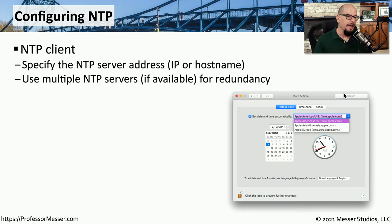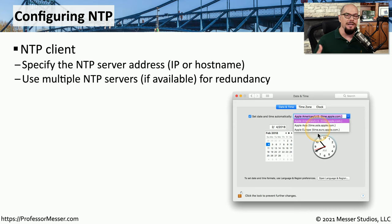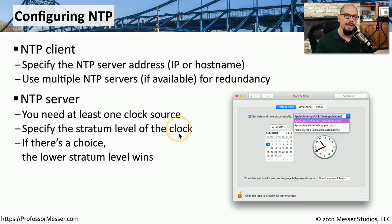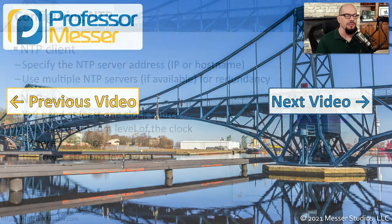Your computer is most likely operating as an NTP client. If you look at the date and time configuration on your device, you'll see the NTP servers that are used to synchronize this clock. You might also be able to put multiple servers into this list, so if you're not able to synchronize against the first one on the list, you can choose the second one. If you have a large network, you may have your own NTP server. This would usually reference a particular stratum device, and you would choose the stratum level based on that value. You may have multiple NTP servers with different stratum values, and if a device is trying to decide which one to synchronize from, it will probably use the lowest stratum device, because that one is going to be the most accurate.